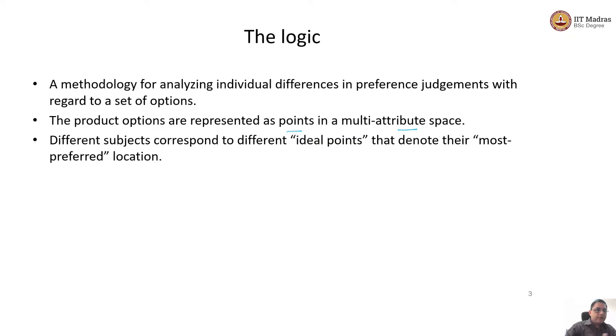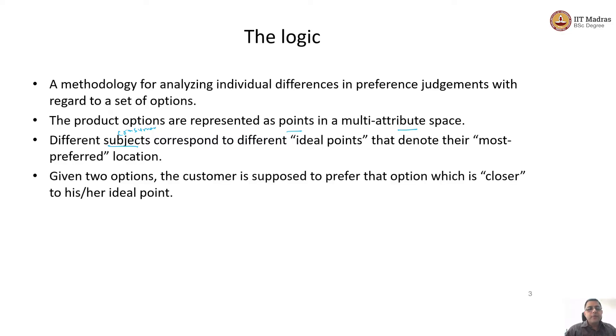Here the subject means consumer. Each consumer has a different ideal point, a different most preferred location. For this particular consumer, we are trying to find out what is their ideal point. We give them two options and the customer is supposed to prefer an option which is closer to their ideal point, which is what I was explaining: D1 less than D2 or D2 less than D1, D1 less than D3. They are going to give me choices so that they give me an option which is closer to their ideal point as a preferred location.